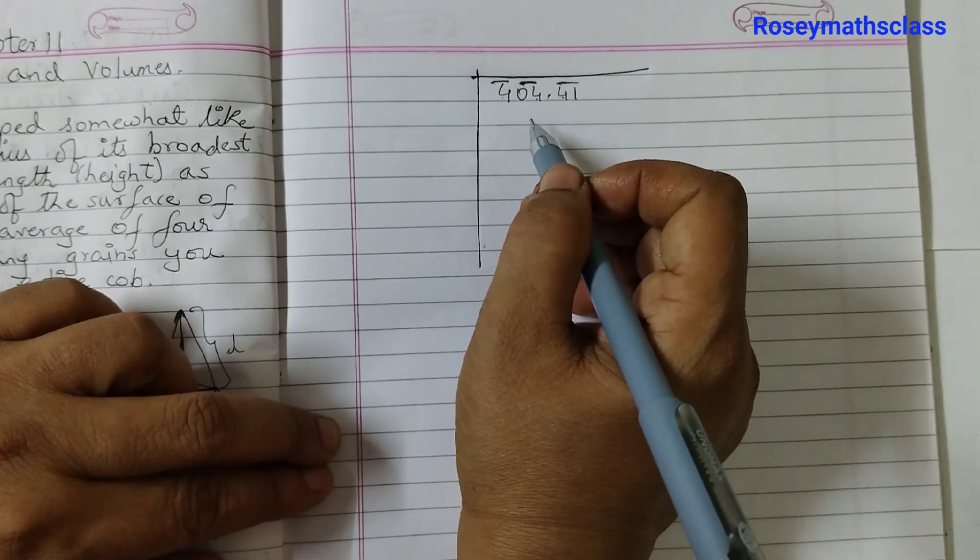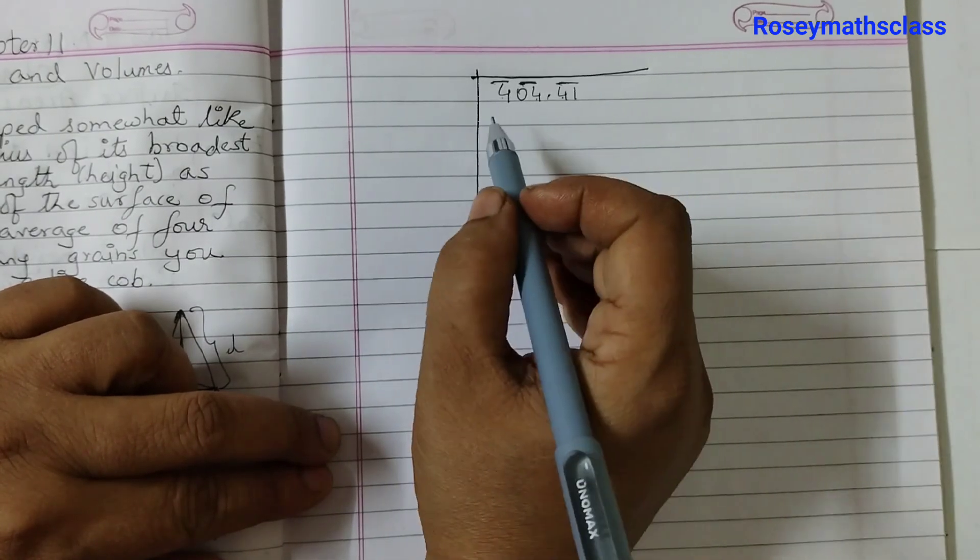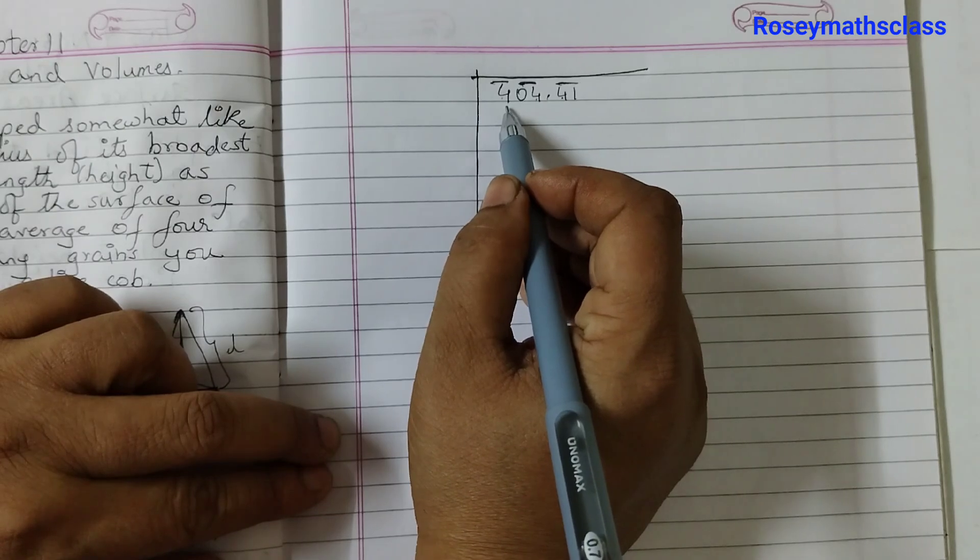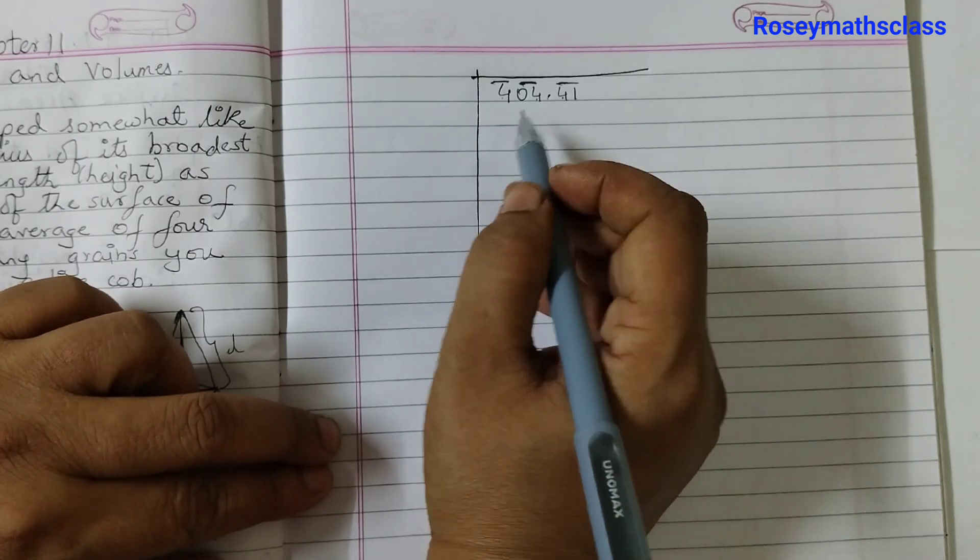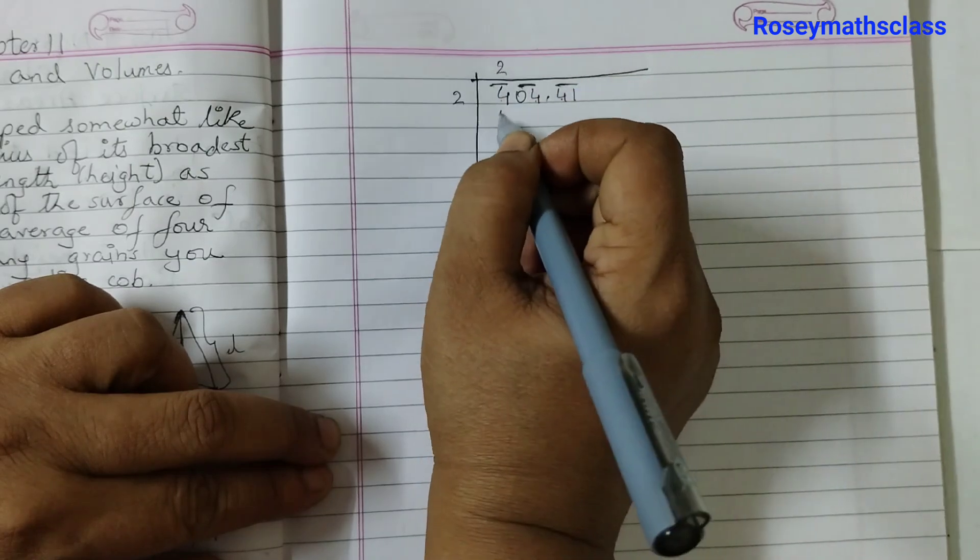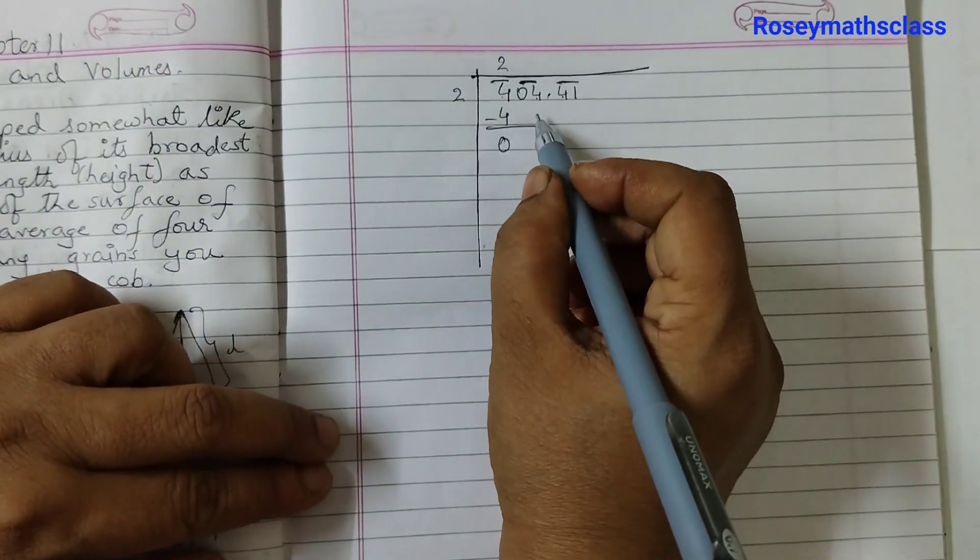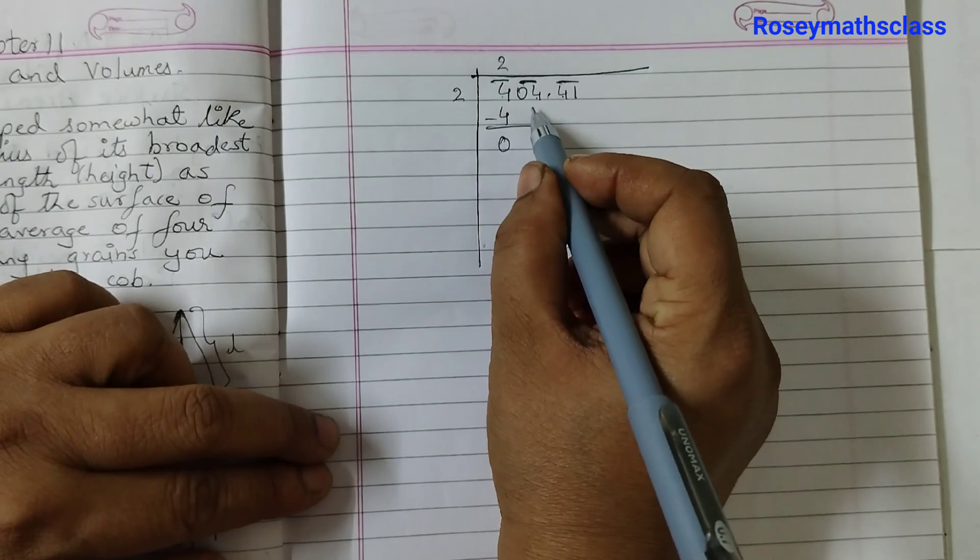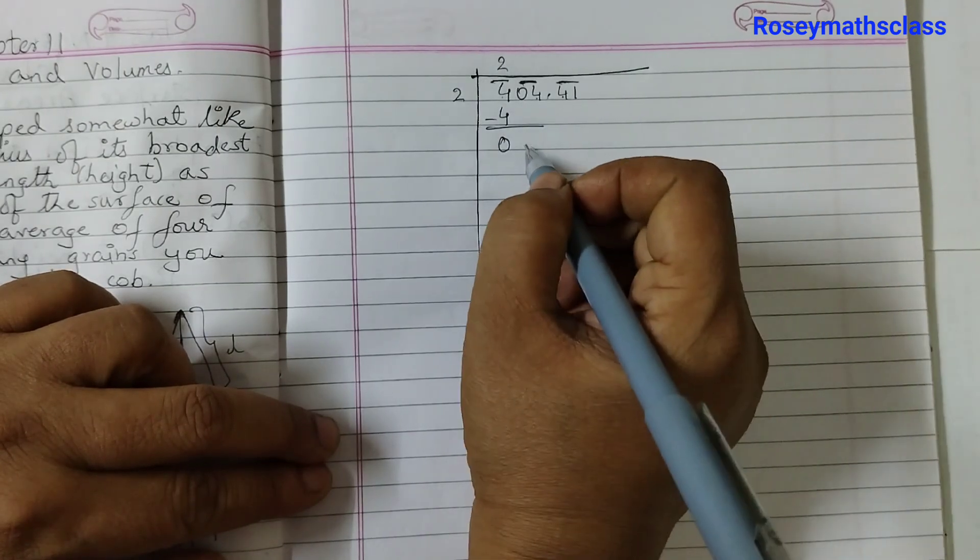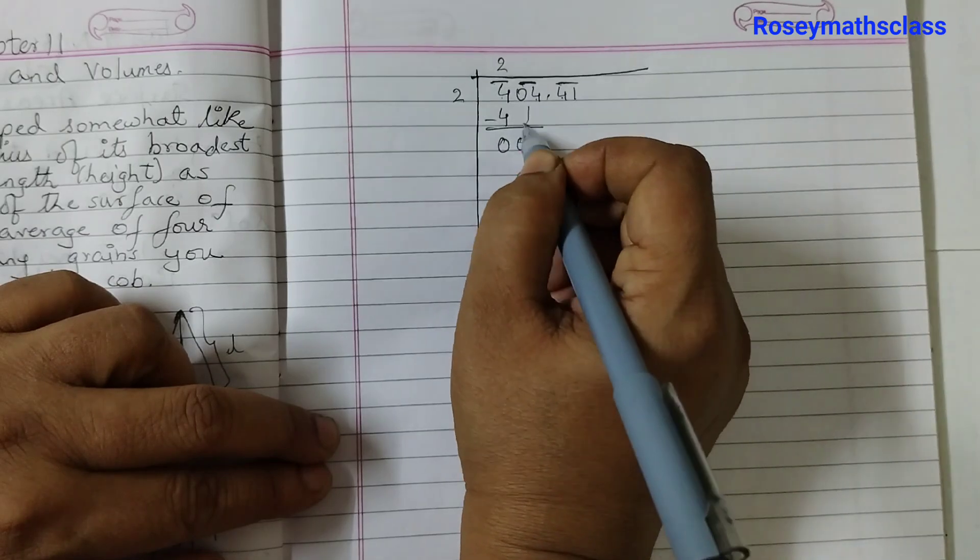Then this is your dividend now. Now you need to find a number when you square it, it should be less than 4 or equal to 4. So 2 into 2 is 4. 4 minus 4, 0. Now bring down the number under the next bar. So we have 04. We bring this down.